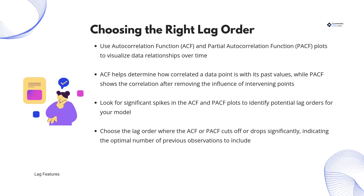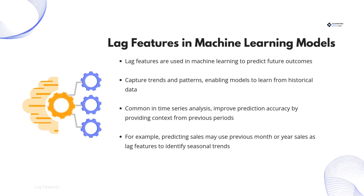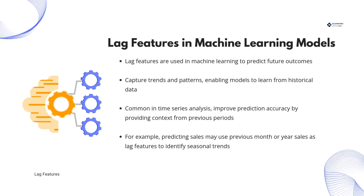Now let's see how lag features integrate into machine learning models. These features are essential for predicting future outcomes, capturing trends, and improving accuracy. They are commonly used in time series forecasting, where historical data provides valuable context. For instance, sales forecasting often utilizes previous months or years' sales figures to detect seasonal trends and fluctuations.